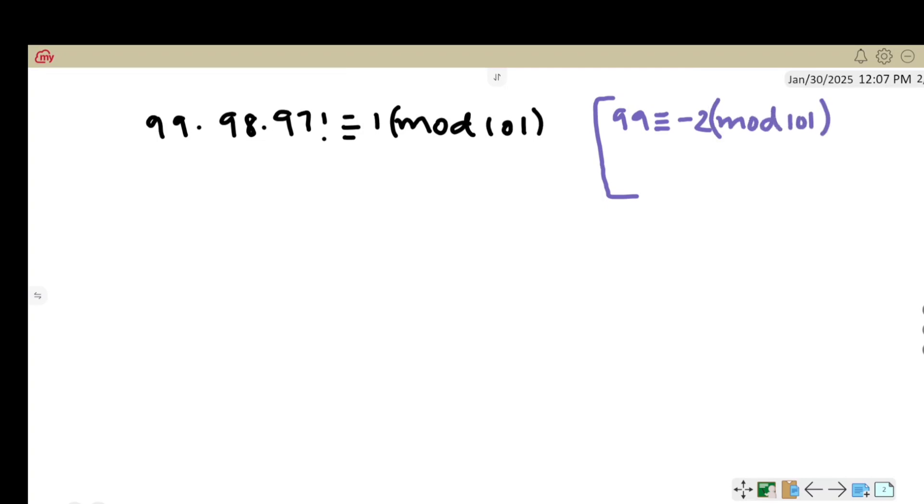99 is congruent to minus 2 mod 101, and 98 is congruent to minus 3 mod 101. So we get minus 2 times minus 3 times 97 factorial congruent to 1 mod 101.